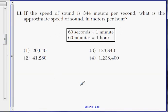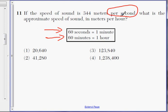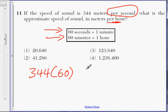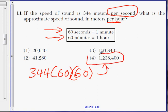Okay, let's go on to number eleven. If the speed of sound is 344 meters per second, what is the approximate speed of sound in meters per hour? They give you a chart: there are sixty seconds to a minute and sixty minutes to an hour. To convert, take 344 and multiply by sixty to get the distance per minute, then multiply by sixty again to get per hour. That gives you choice four: one million, two hundred thirty-eight thousand and four hundred.